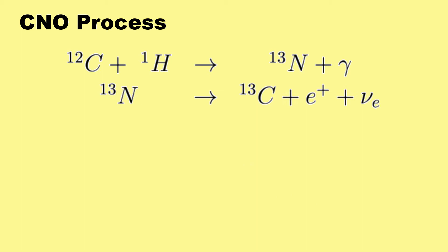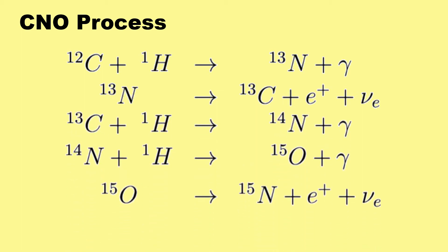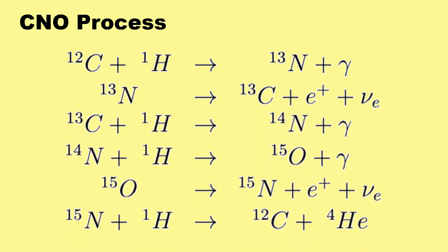For larger main sequence stars, there's another way to make helium out of hydrogen using the carbon, nitrogen, and oxygen, the CNO cycle. This converts hydrogen into carbon and helium.